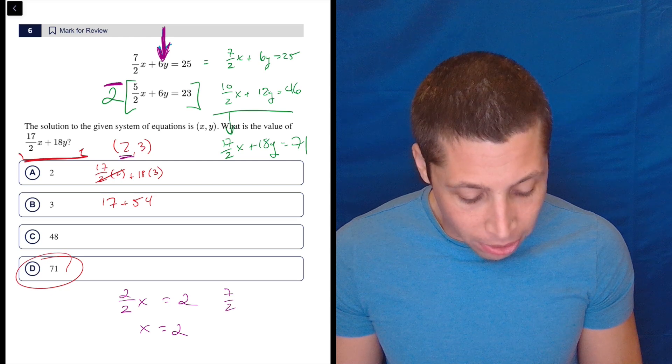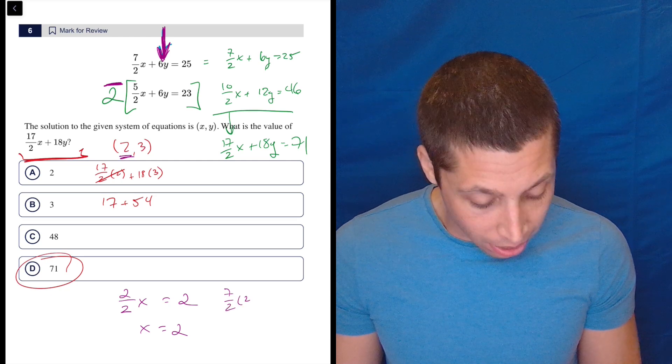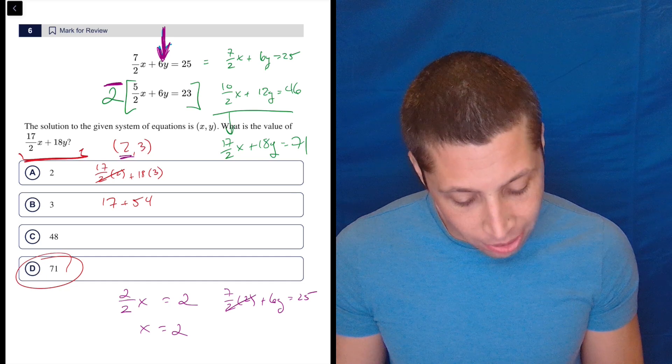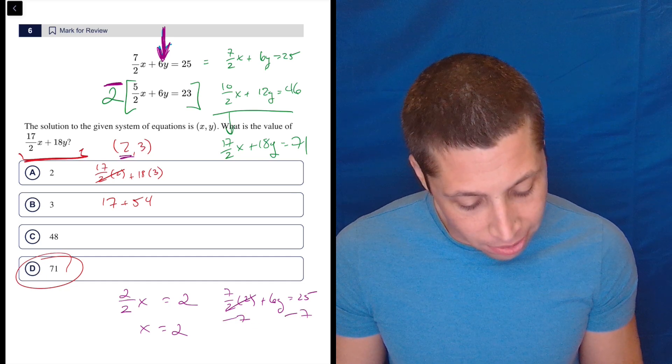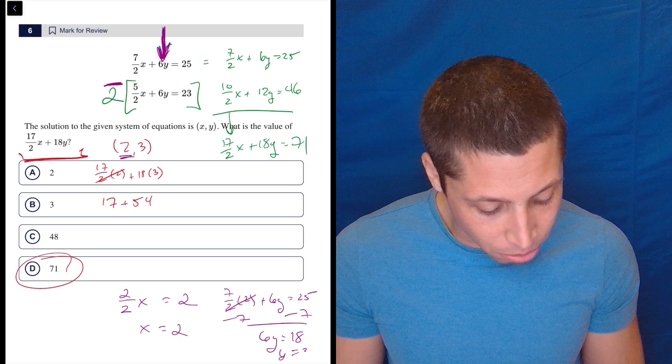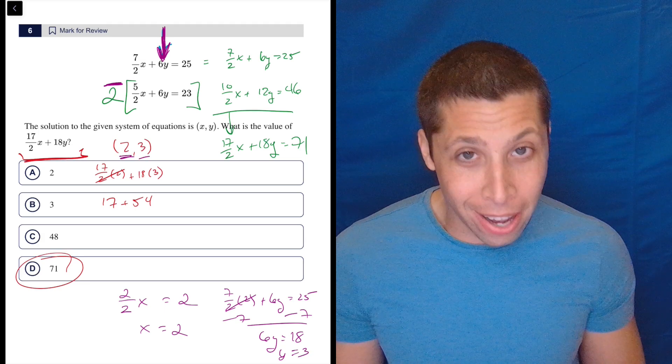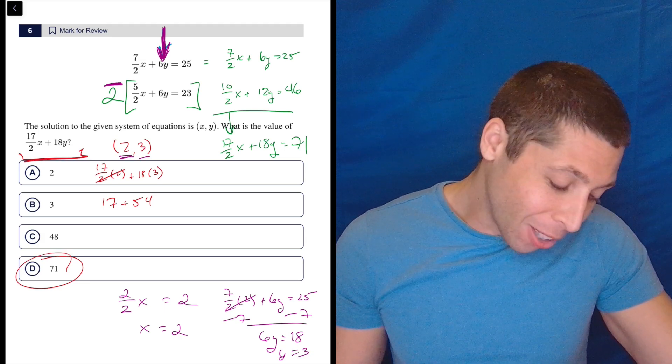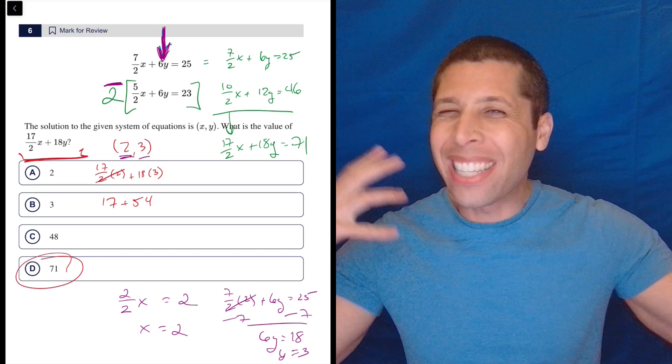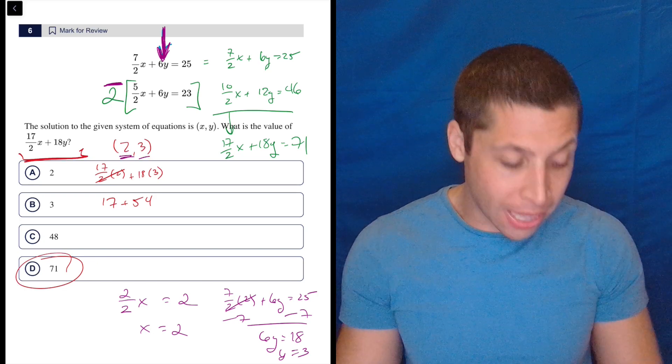And then, okay, fine. We go here and we do 7 halves times 2 plus 6y is 25. So these cancel. So minus the 7, 6y is 18. Y is 3. That's what we got as well. That'll get you there. But look at how much more algebra we need to do. We need to do it with fractions. We need to do it with distribution. We need to think cleverly about how we're going to eliminate things.